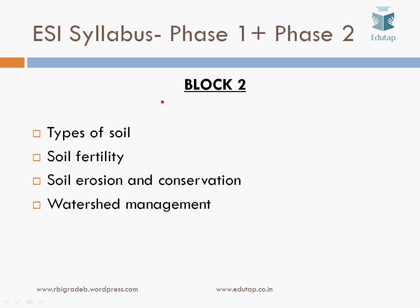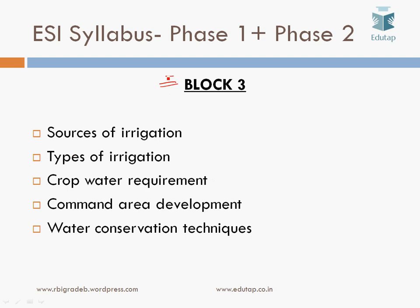Block 2 is related to soil: types of soil, soil fertility, soil erosion and soil conservation, and watershed management. Block 3 is irrigation: sources of irrigation, types of irrigation, the water requirements of various crops, command area development, and water conservation techniques.